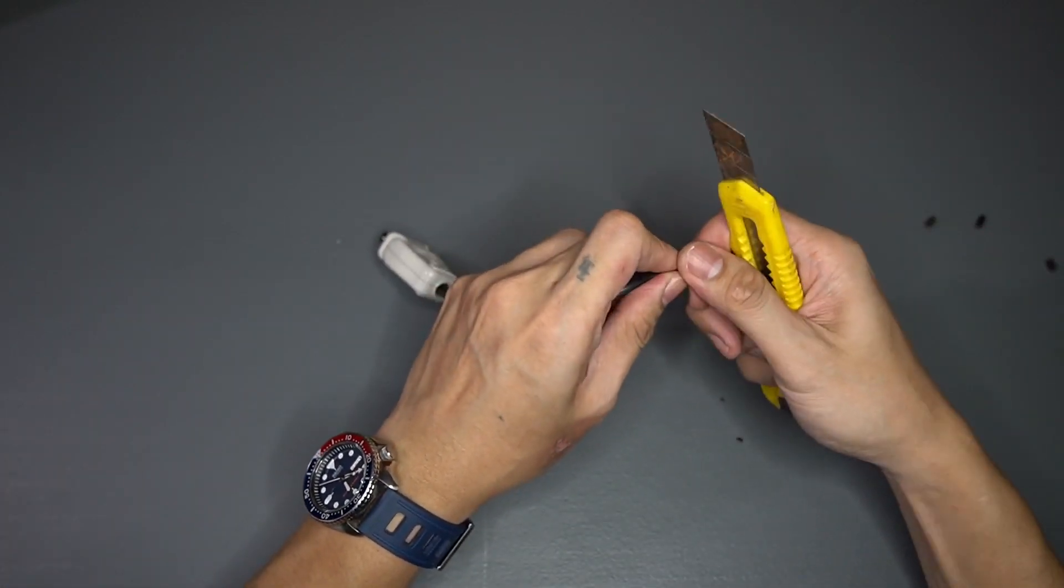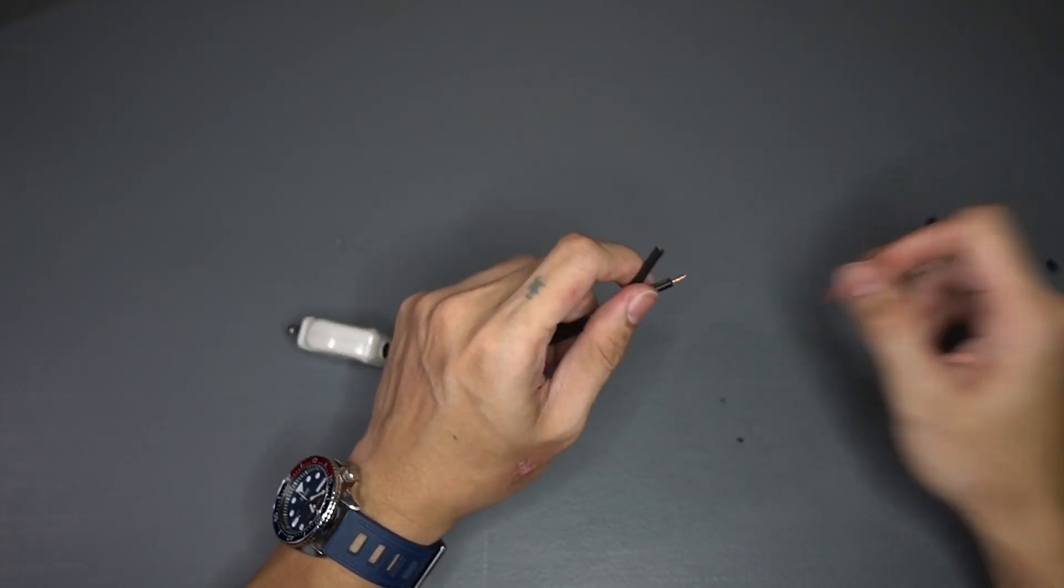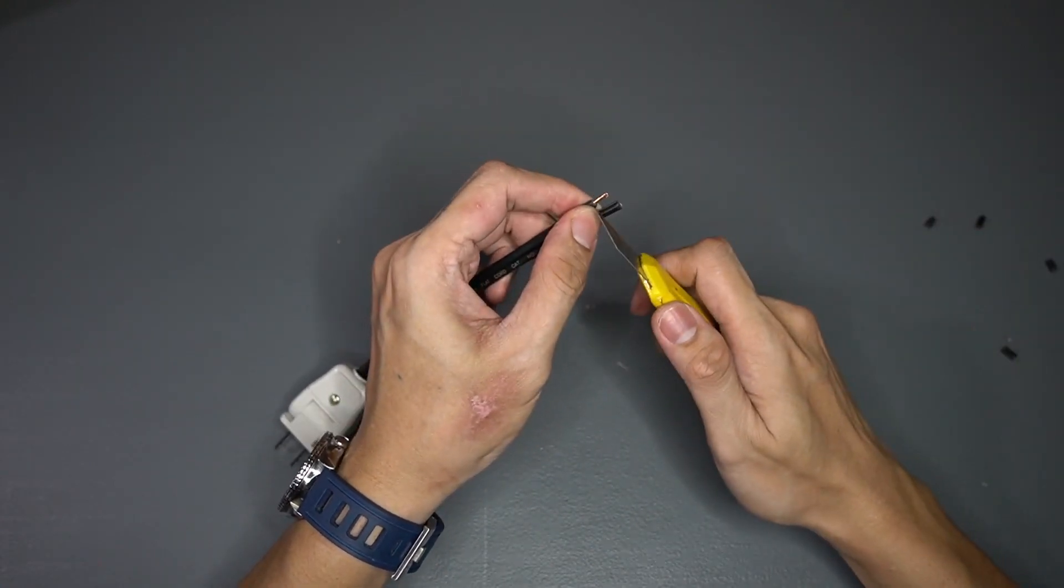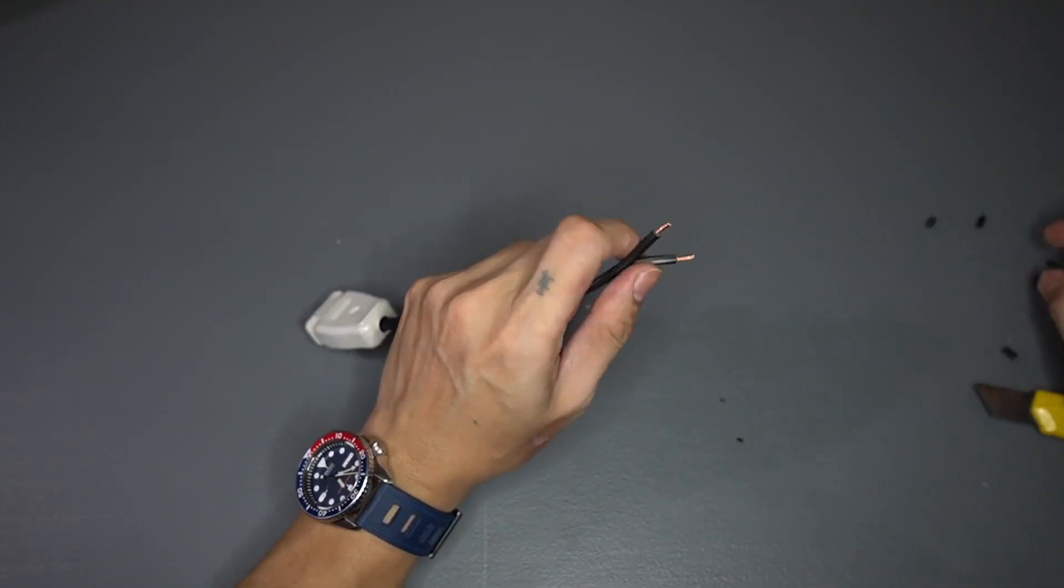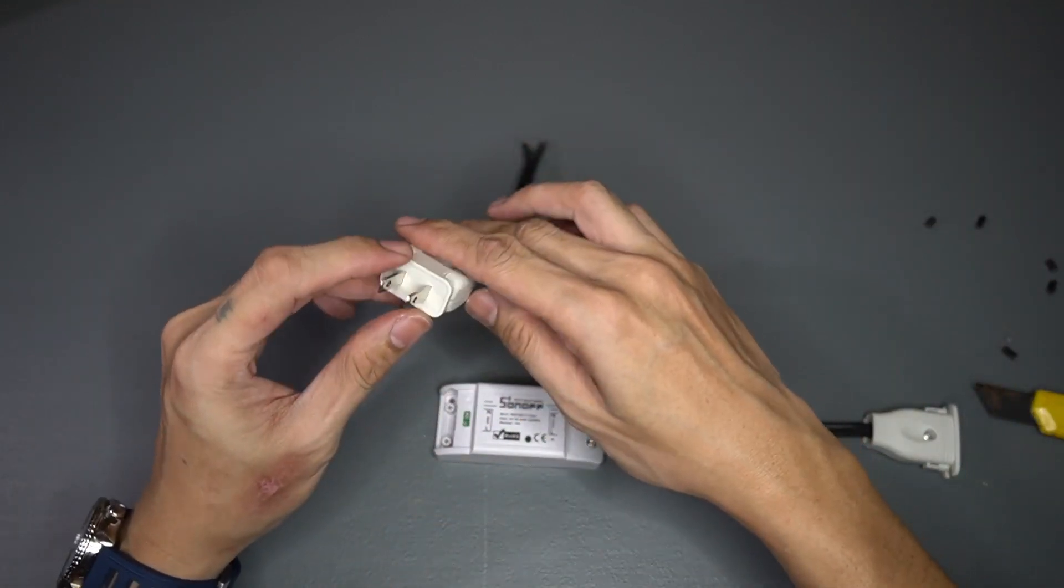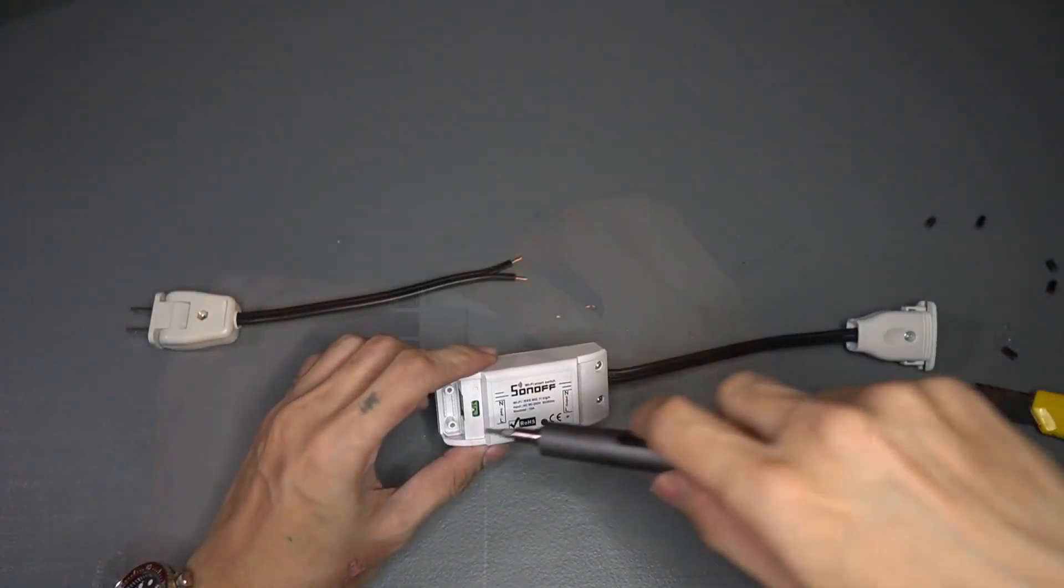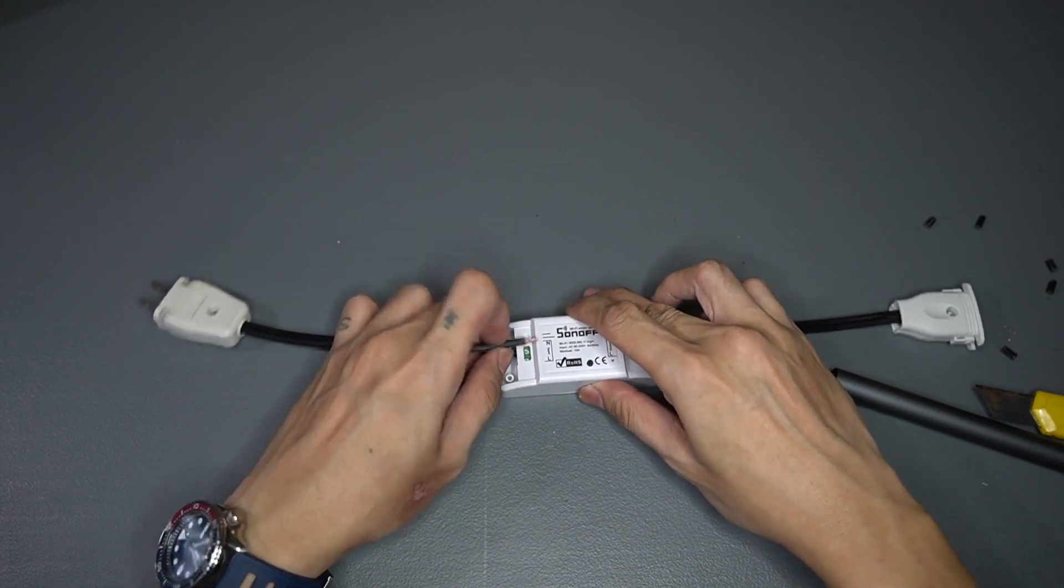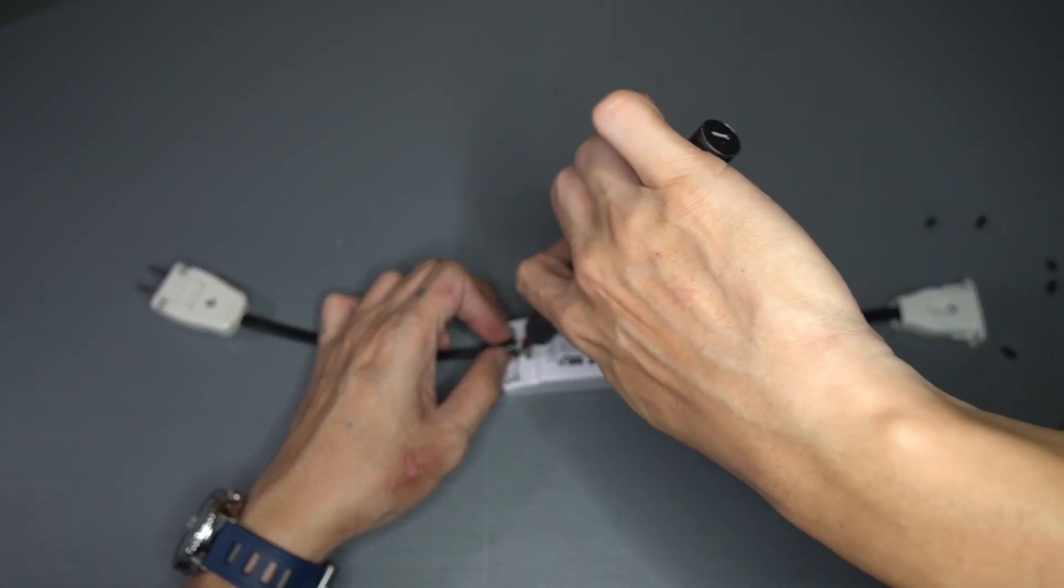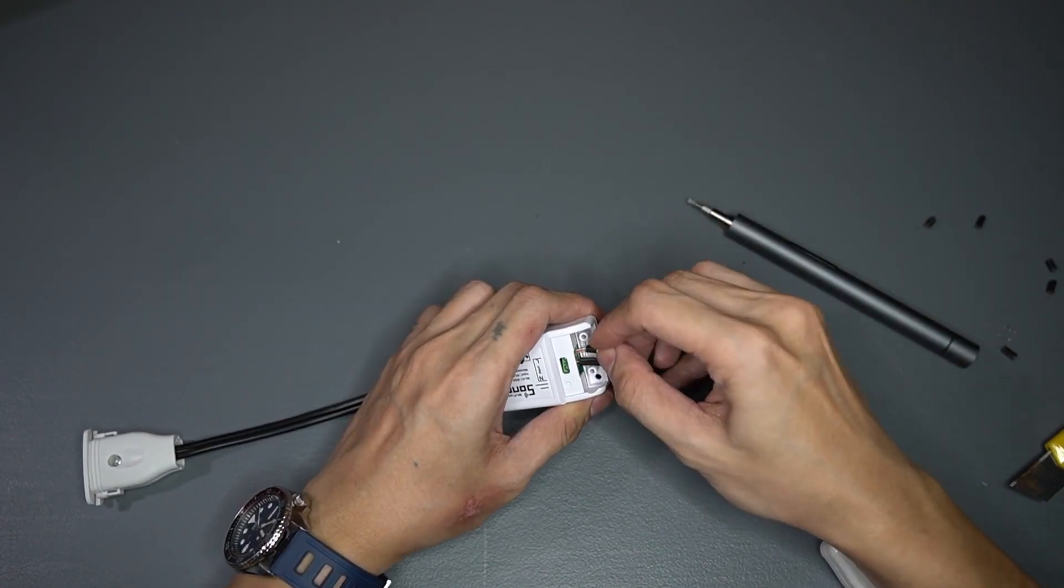On the other side of the wire, strip each wire to a length that's just about enough for the terminal to accommodate. Observe proper polarity before connecting the wires to the terminal. Loosen the terminal screws with your screwdriver. Insert the wires to the terminals one at a time and fix them using the screw. Again, observe proper polarity.